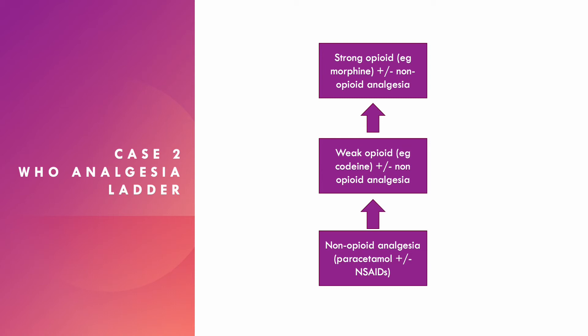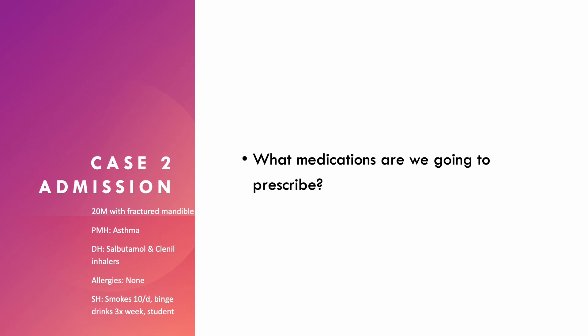Here is the analgesia ladder. You start at the bottom with non-opioid analgesia — paracetamol plus or minus NSAIDs. You step up to weak opioids such as codeine, again plus or minus non-opioid analgesia. Then you step up to a strong opioid such as morphine, again plus or minus non-opioid analgesia. It's important to note the WHO analgesia ladder was created for long-standing chronic patients such as cancer patients — it wouldn't be appropriate for an acute trauma patient. You start at the top and work your way down as things become less painful.